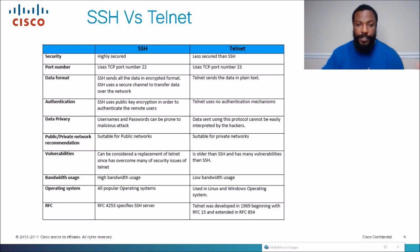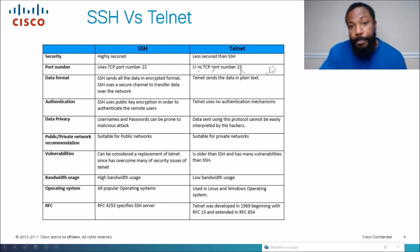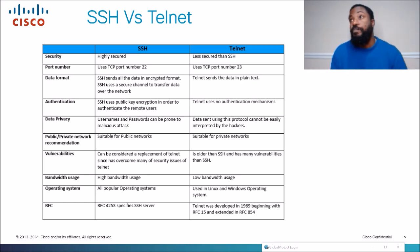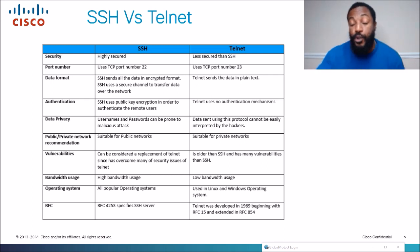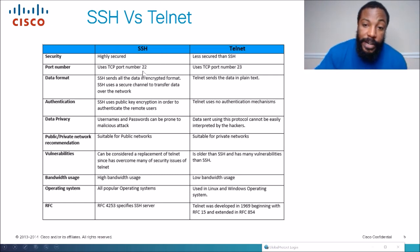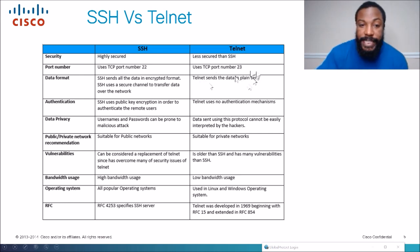Here's a quick rundown on the differences between SSH and Telnet. SSH is highly secured; Telnet is not — a hacker can see your information if you're just using Telnet. A lot of organizations are moving away from Telnet and using SSH to log into their devices. SSH uses port 22; Telnet uses TCP port 23. SSH data is encrypted; Telnet is plain text. SSH uses public key encryption to authenticate users; Telnet has no authentication mechanisms.